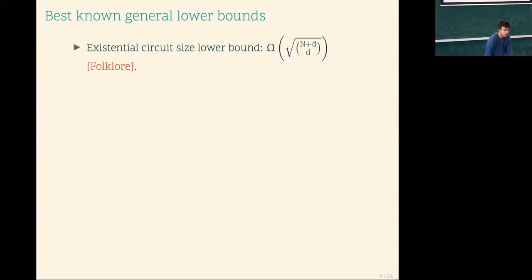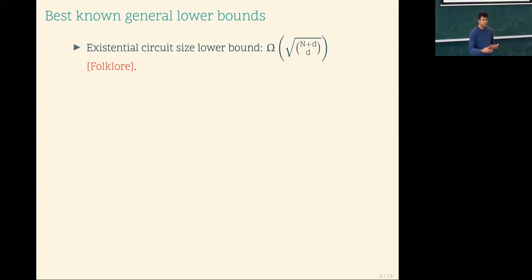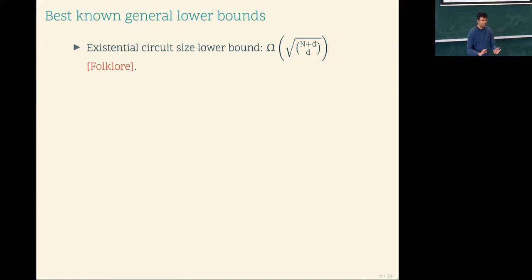The existential circuit size lower bound says there exist polynomials requiring exponential arithmetic circuits. The counting argument involves n+d choose d monomials. Depending on how n and d are related, whichever is smallest goes into the exponent. We are looking for lower bounds against explicit polynomials — those which are easily definable. The hard polynomial exists, but I don't know which one it is.